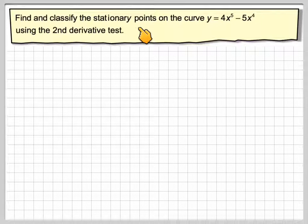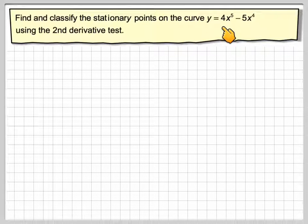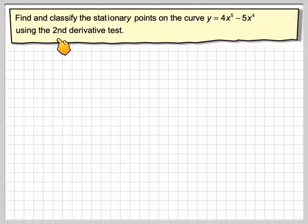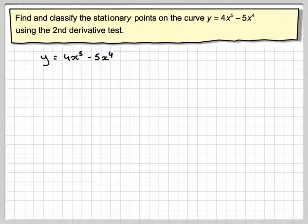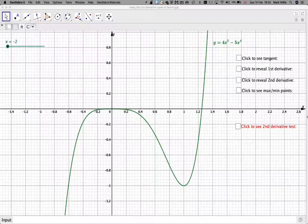Find and classify the stationary points on the curve y = 4x⁵ - 5x⁴ using the second derivative test. So we've got y = 4x⁵ - 5x⁴. Just before we actually do it, let's have a look at what that curve looks like.